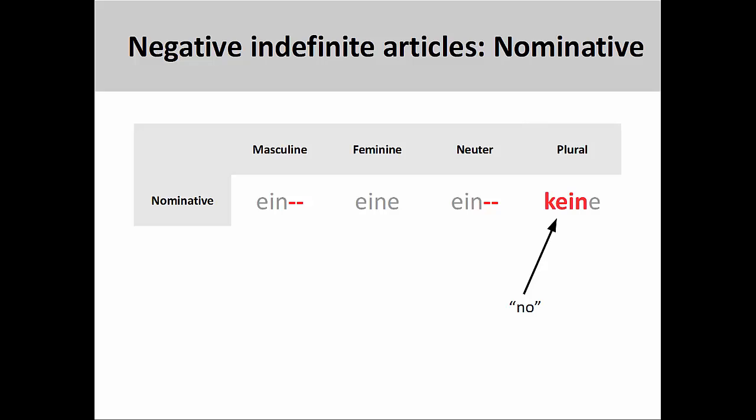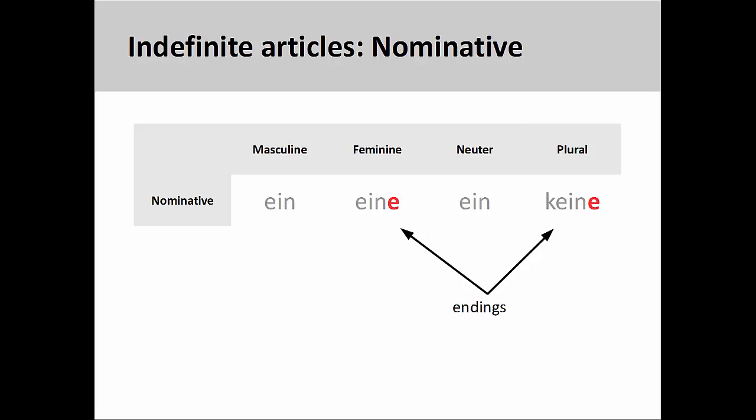As you see here, the plural negative indefinite article in the nominative case is keine. I will discuss negative indefinite articles in a later presentation. The endings for the feminine and plural indefinite articles in the nominative case are -e, which is similar to the pattern we saw in definite articles.